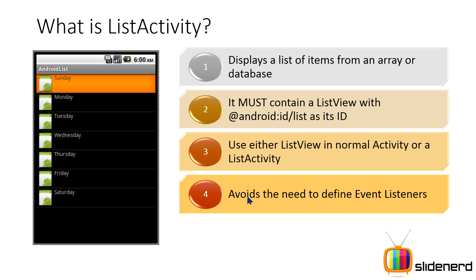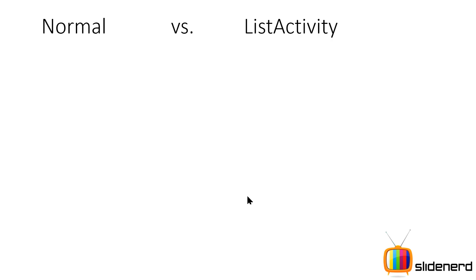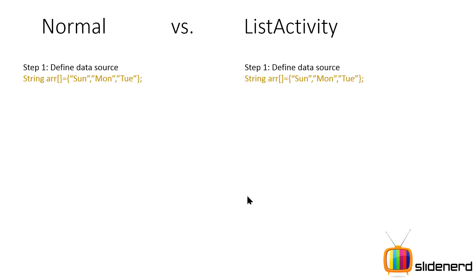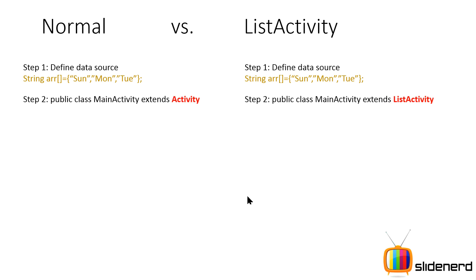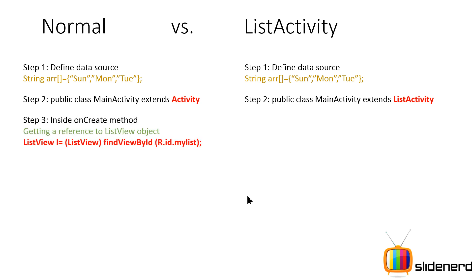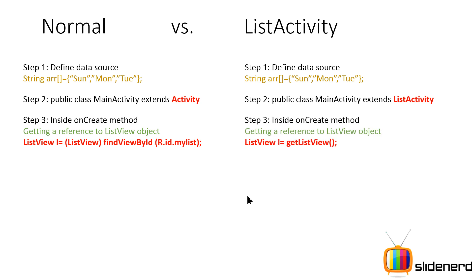Let's see exactly what is the difference between a normal activity and a ListActivity. Here you have normal on the left and list activity on the right. Step one: define the data source — it is the same step in both places. Step two: here you implement the normal activity, and on the right side you implement the ListActivity. Step three: inside your onCreate method, to find the list view you would normally say findViewById from XML to link it. But on the right side you simply say ListView l = getListView().